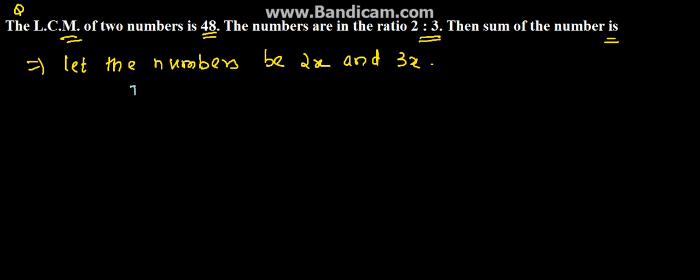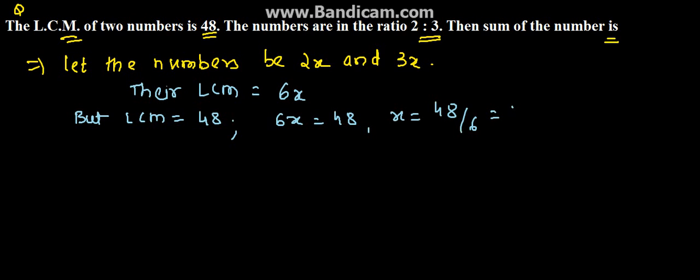The LCM of 2x and 3x is 6x. But we have been given LCM as 48. Therefore, 6x equals 48, which means x equals 48 divided by 6, which equals 8.